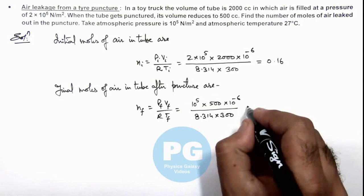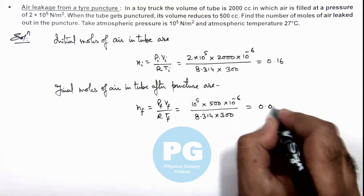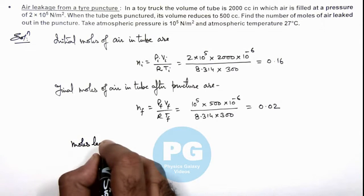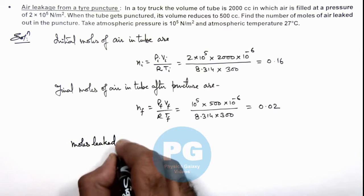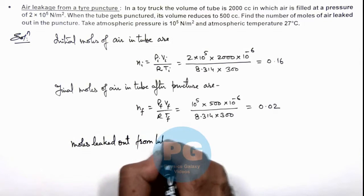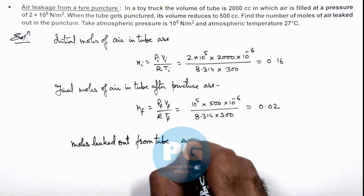So on simplifying, this value gives us 0.02 moles. So directly we can calculate moles leaked out from tube as delta n which is n_i minus...